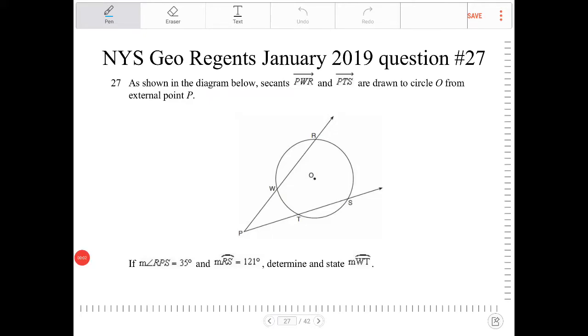As shown in the diagram below, secants PWR and PTS are drawn to circle O from external point P. Angle RPS measures 35 degrees.